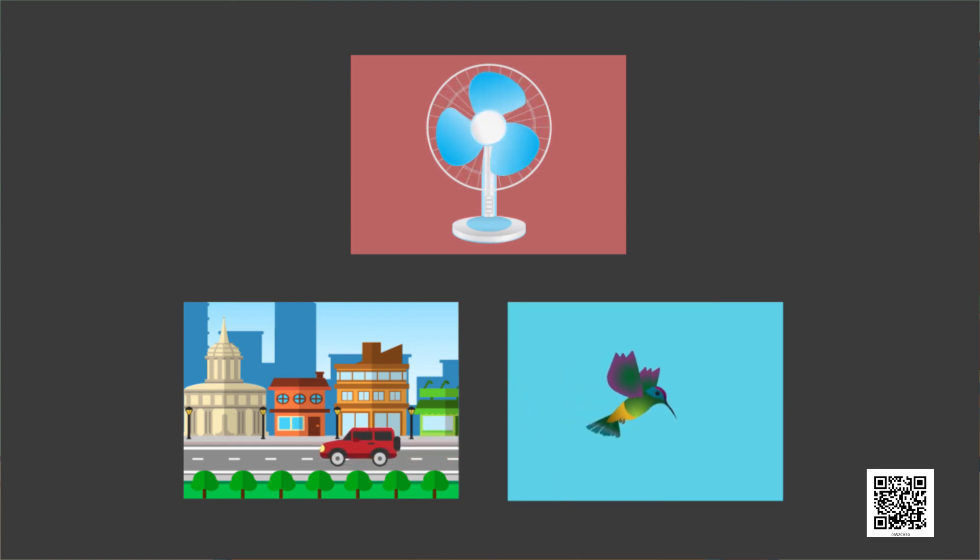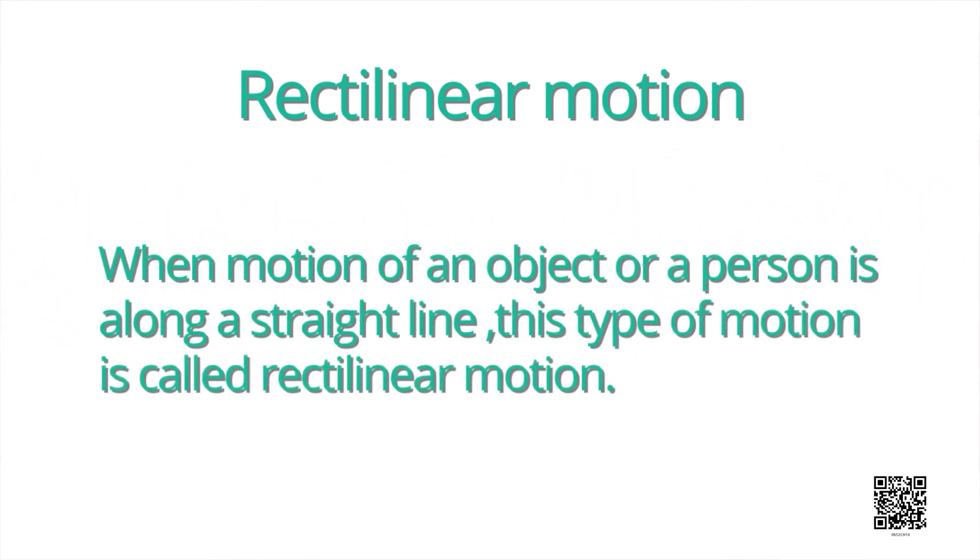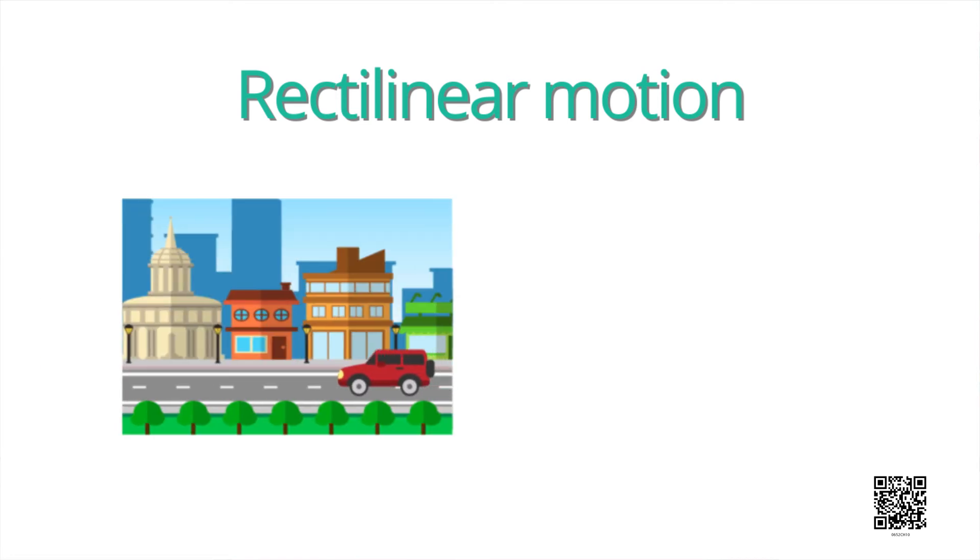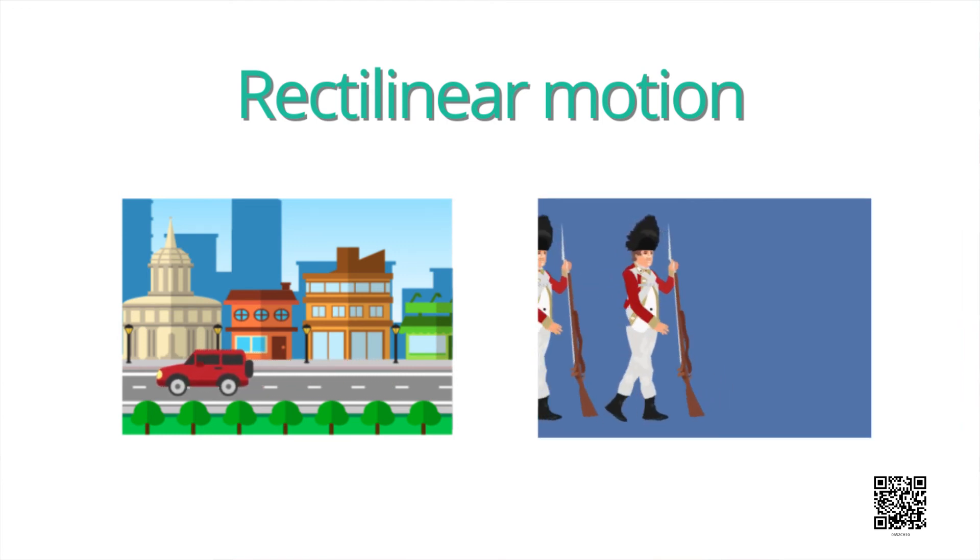Motion can be of various types. The first type of motion we are going to discuss here is Rectilinear motion. When motion of an object or a person is along a straight line, this type of motion is called Rectilinear motion. For example, a car moving on a straight road or march past of soldiers in a parade.